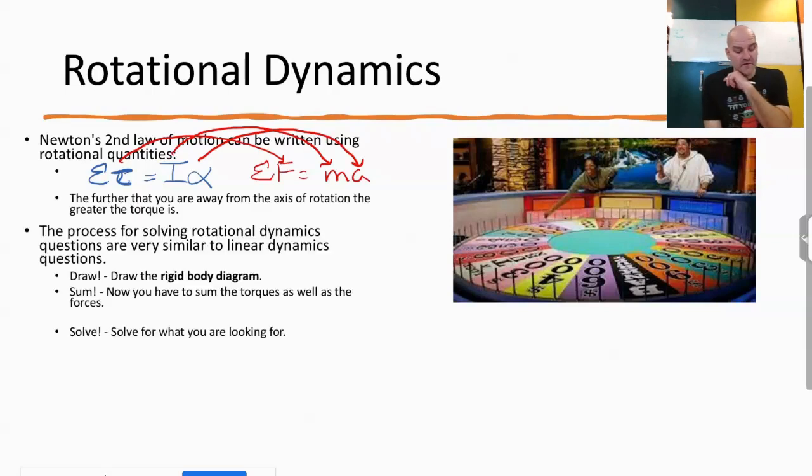Now, the process for solving rotational dynamics questions are very similar to linear dynamics questions. It's draw, sum, solve. But instead of calling it a free body diagram now, we're going to call it a rigid body diagram. Although you may hear me slip up and say free body diagram, in actuality it's a rigid body diagram. So that's our draw step. And one thing when you do this step, make sure you identify the axis of rotation. Because if a force is acting at the axis of rotation, we don't have to worry about that in terms of its torque.